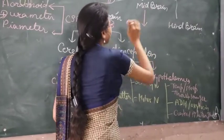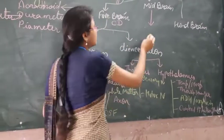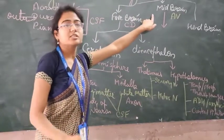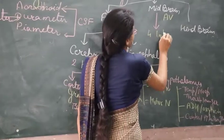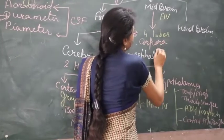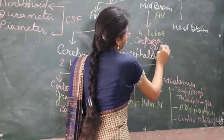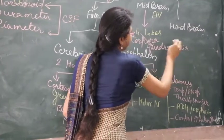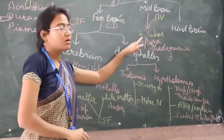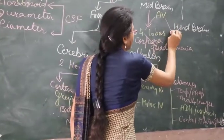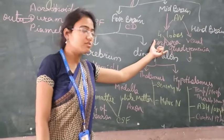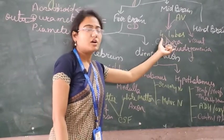The midbrain functions can be remembered as AV. The midbrain is made up of four lobes known as corpora quadrigemina — quadri meaning four. Two of these lobes are related to auditory functions and two lobes are related to visual actions. So the midbrain is the center for audio-visual organs of our body.